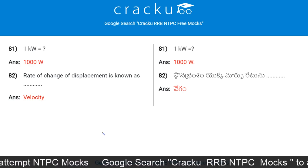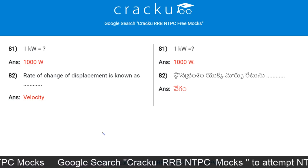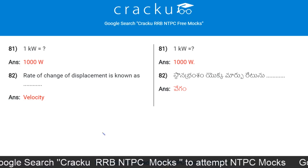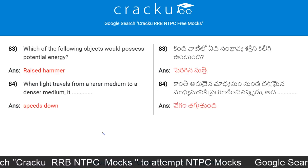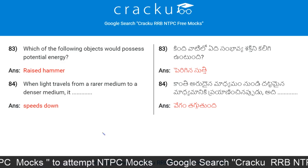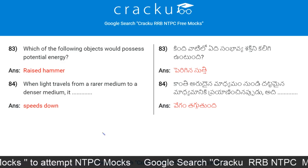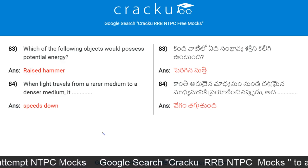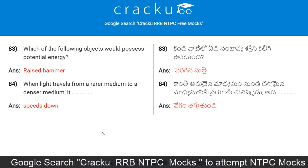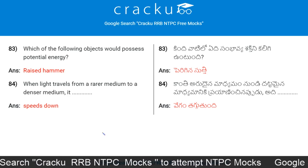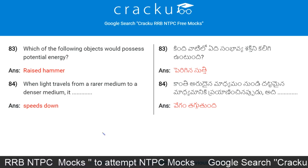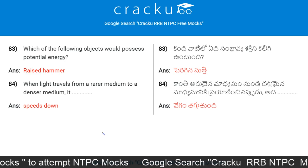Rate of change of displacement is known as velocity. Which of the following objects would possess potential energy? A raised hammer. When light travels from a rarer medium to a denser medium, its speed decreases.